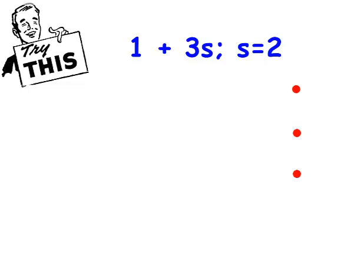Again pause the video and see if you can do it by yourself, and then unpause it to find out the answer. My algebraic expression is here. The variable is s, and it's giving me the value of the variable. So I rewrite the algebraic expression, and where I see s, I replace it with 2. Because I went ahead and put the number 2 in for s, I need to put the operation that was going on between the 3 and the s, and that's multiplication.